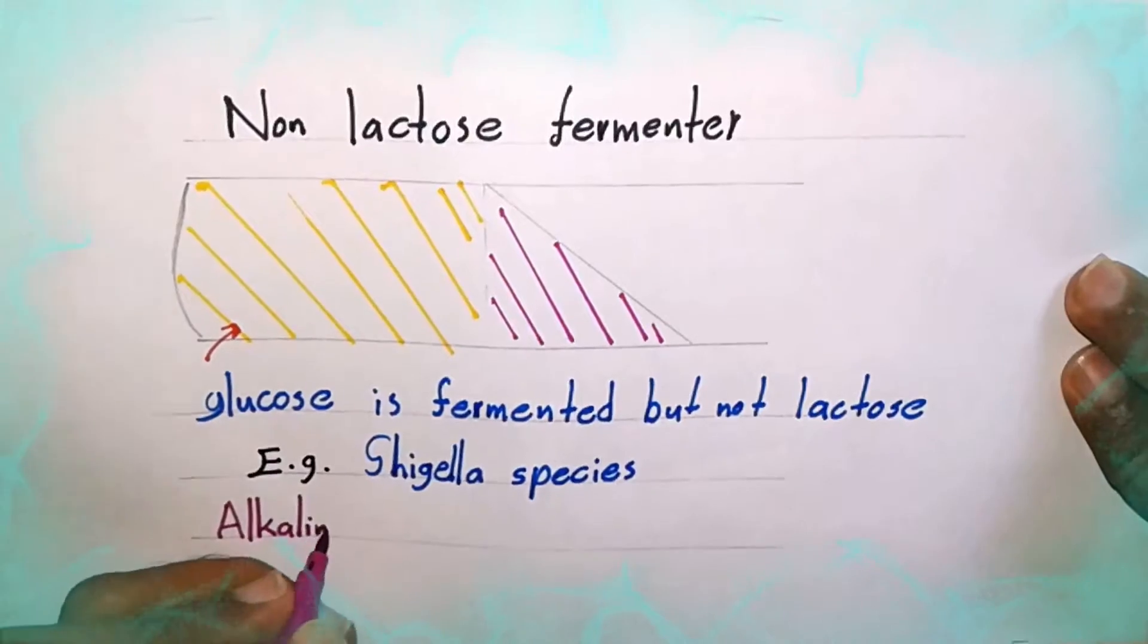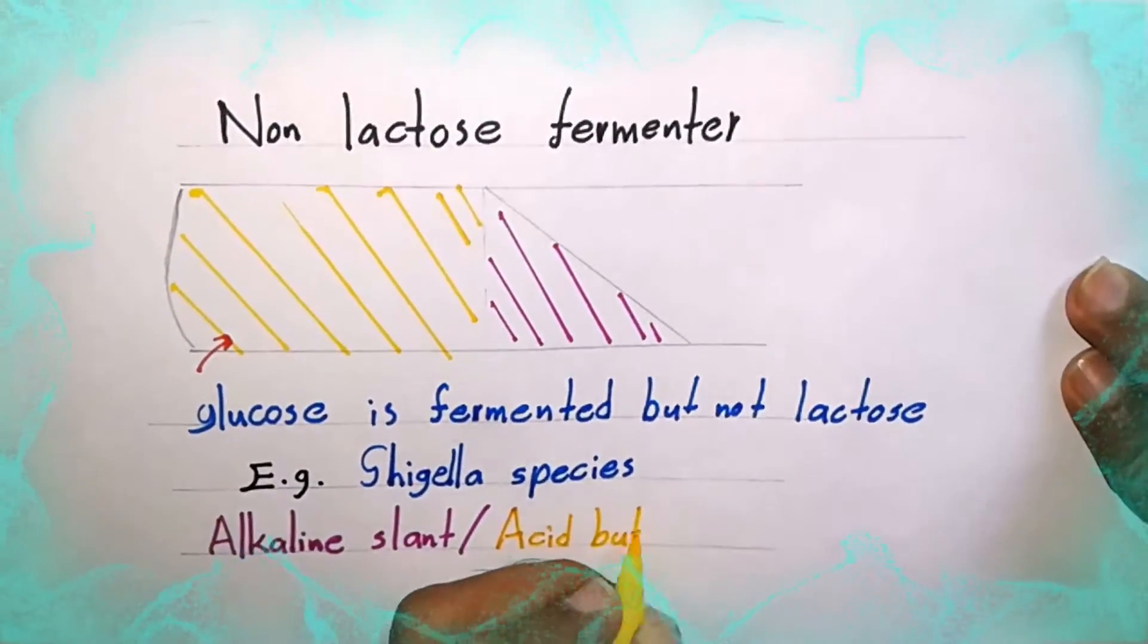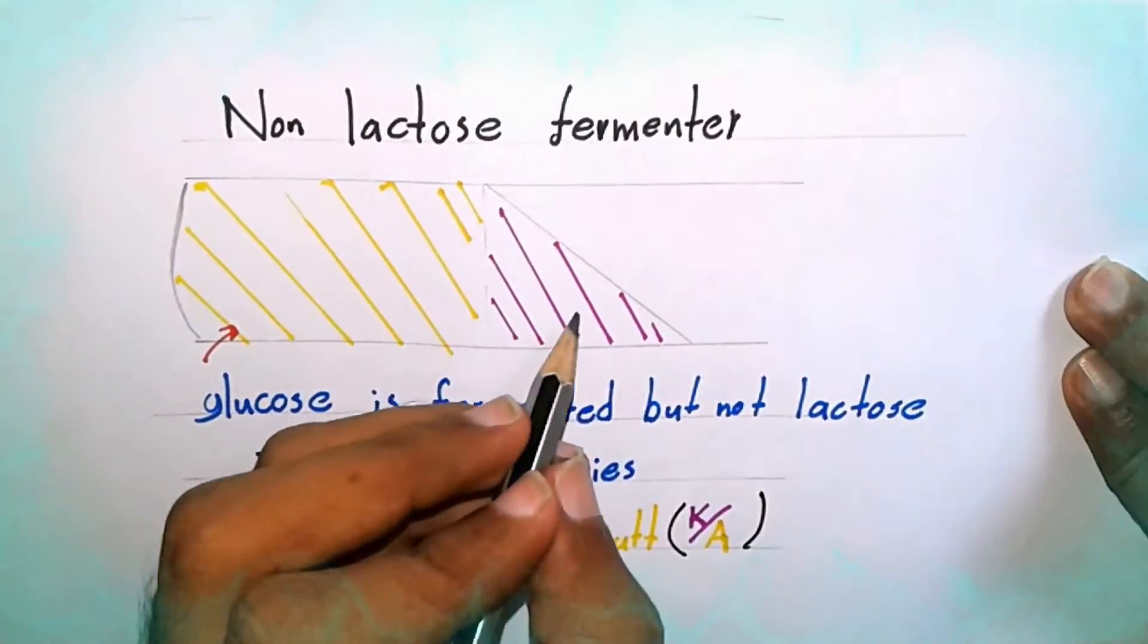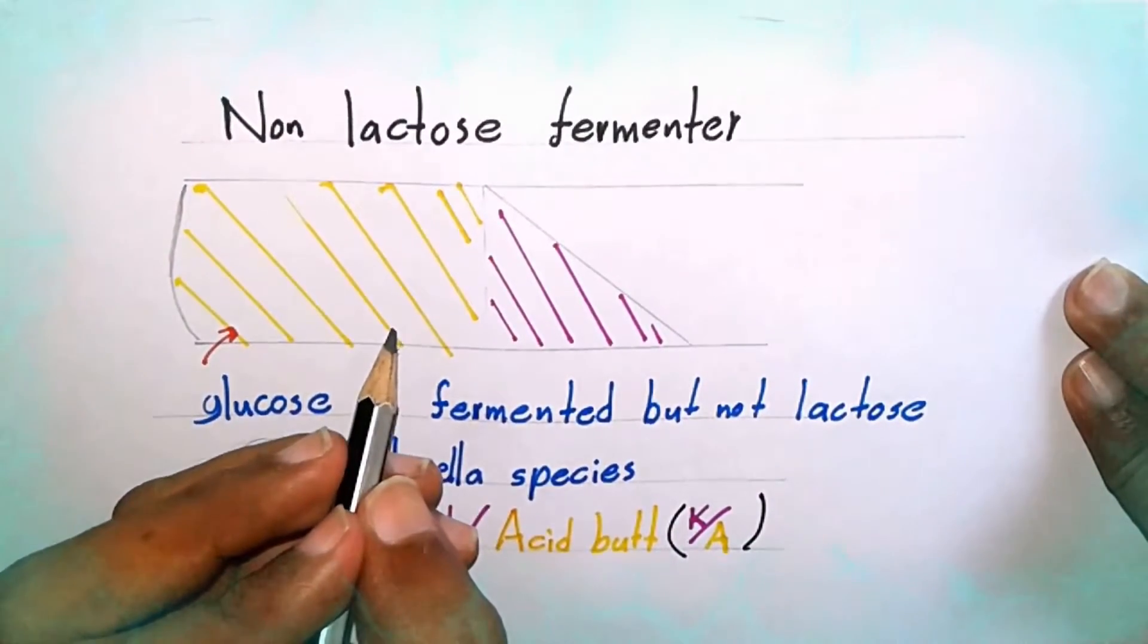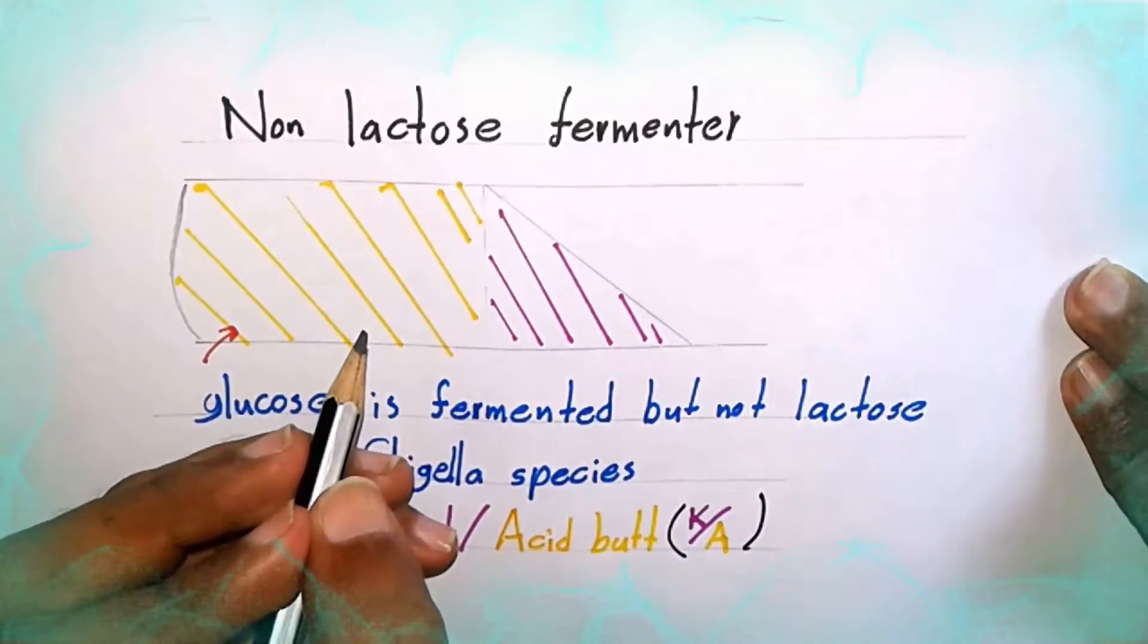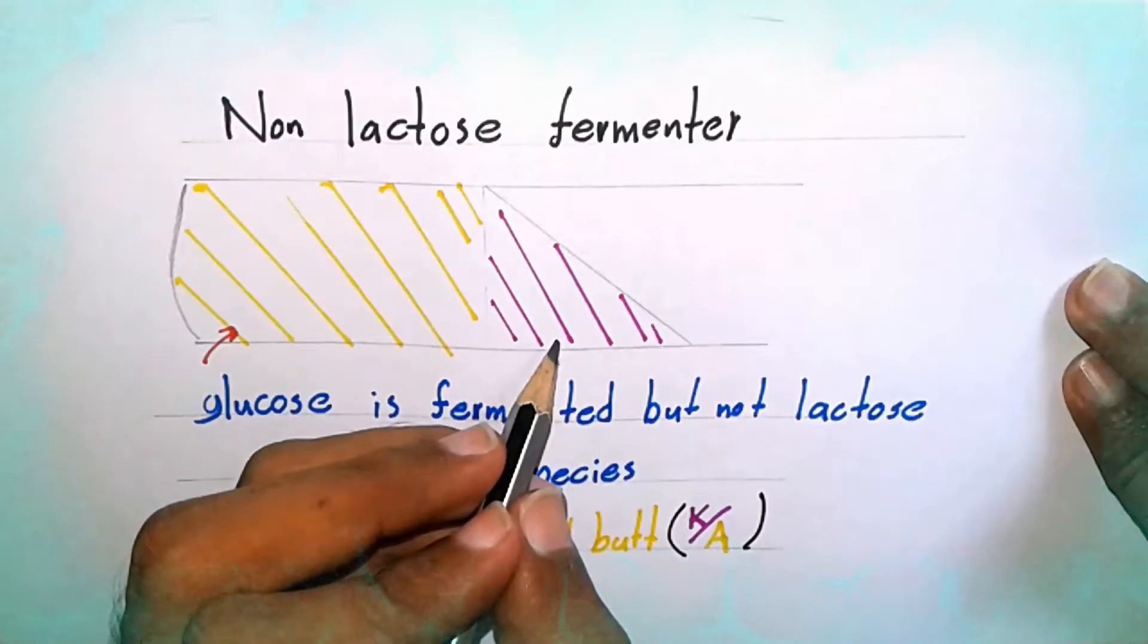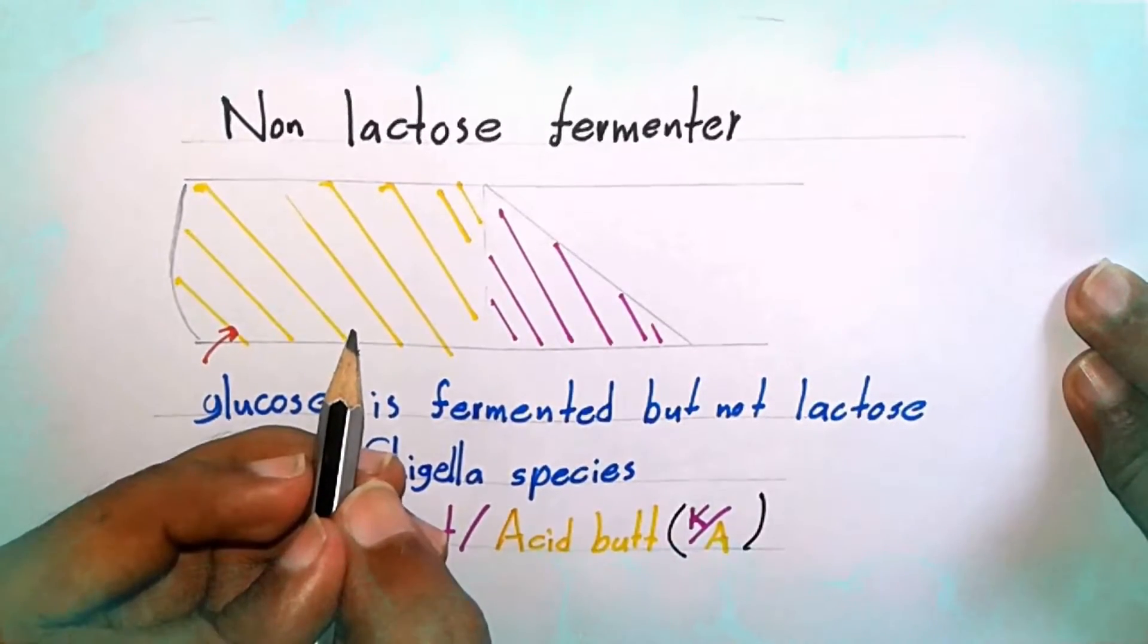Alkaline slant, Acid butt, KA pattern. Non-lactose fermenter causes acidification of both the deep and slant of the medium via the fermentation of glucose. But the slant reverts back to alkaline pH as alkaline amines are formed from the oxidative decarboxylation of peptides near the surface.